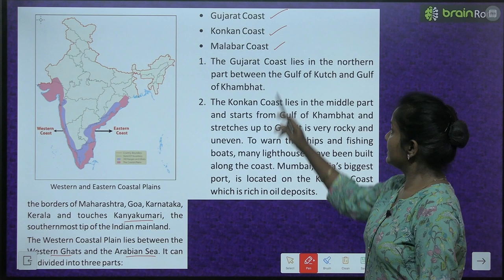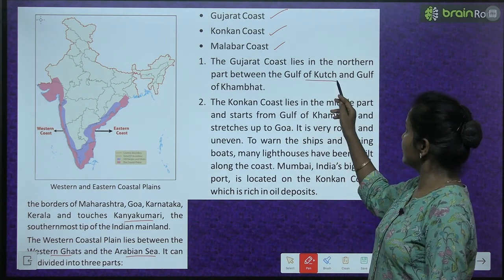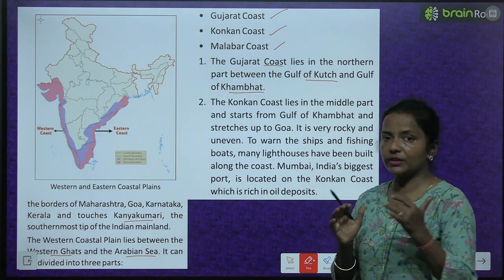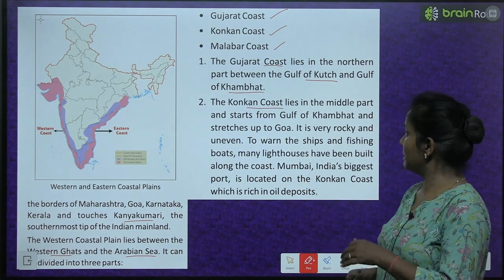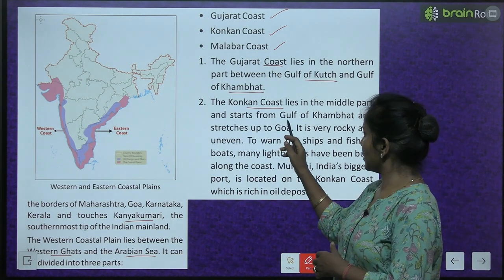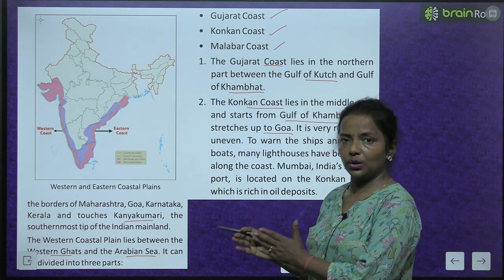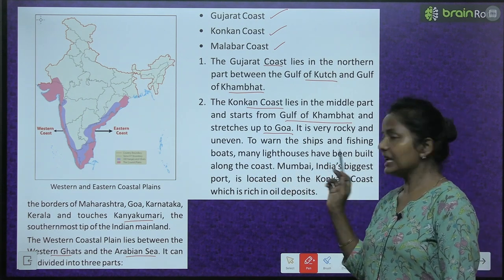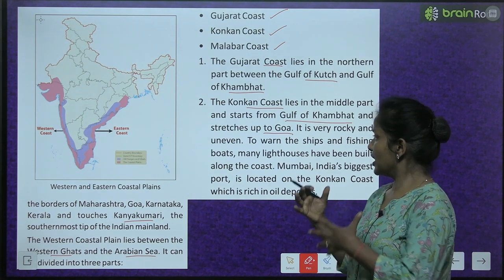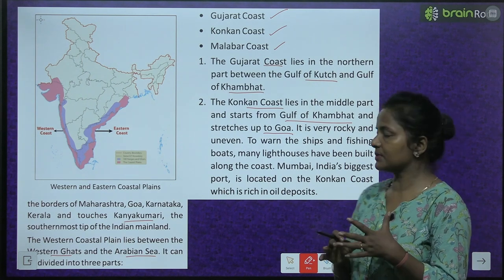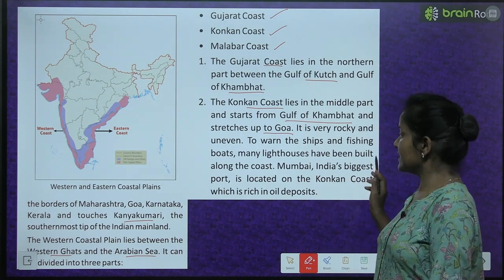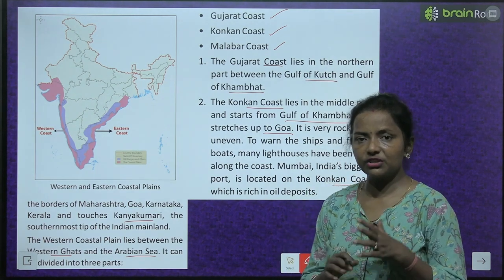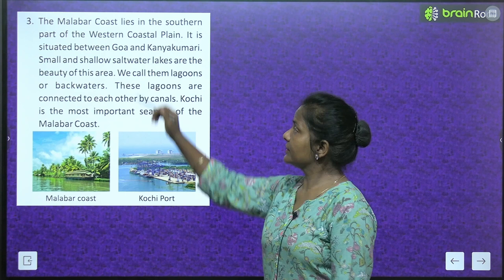The Gujarat coast lies in the northern part, between the Gulf of Kachchh and the Gulf of Khambhat. The Konkan coast lies in the middle part — it starts from the Gulf of Khambhat and stretches up to Goa. It is very rocky and uneven, so to warn ships and fishing boats, many lighthouses have been built along this coast. Mumbai, India's biggest port, is located on the Konkan coast, which is also rich in oil deposits.